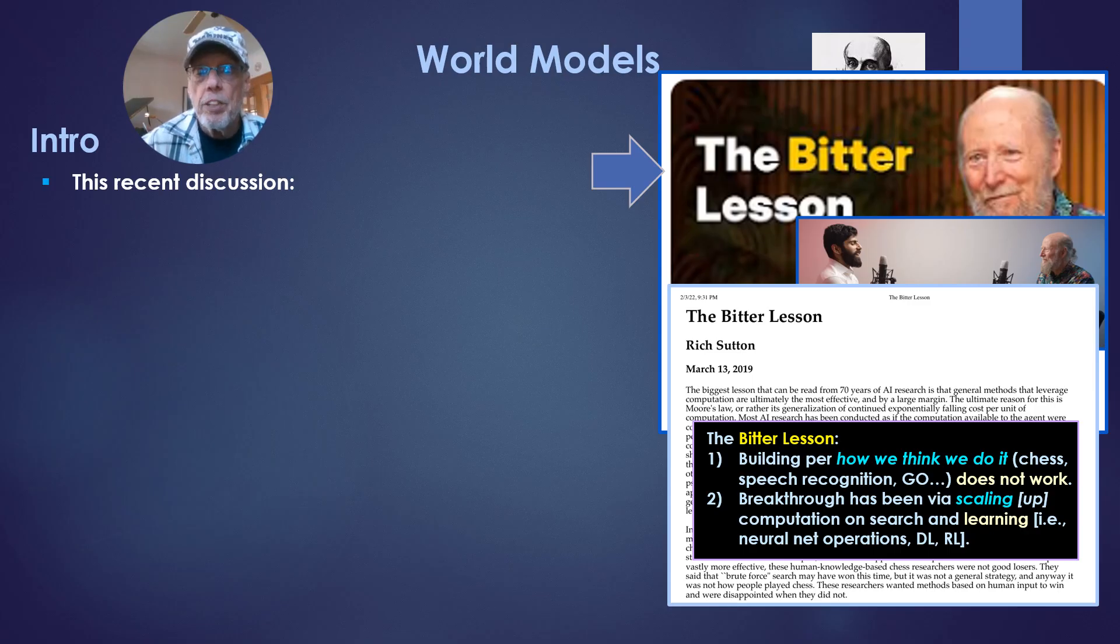And the main point of it here is this: building for how we think we do it, for example, how we think people did chess or how humans do speech recognition or how masters of Go did Go, just does not work. And he says the breakthrough has been just via scaling, increasing computation on search and learning. That is by learning neural net operations like deep learning, reinforcement learning, applying these basic statistical algorithms to these problems. And we get great results.